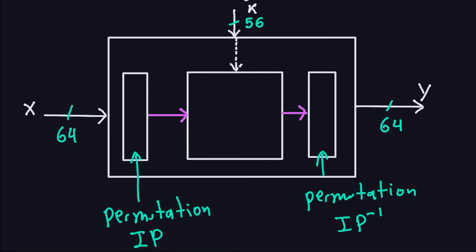Hello and welcome again. We were looking at the internal structure of DES. We had this picture from before — remember we had the 64-bit block coming into the DES cipher. The first thing that happens to that block is it encounters the initial permutation, which is going to permute the zeros and ones in this block before it goes into the black box.